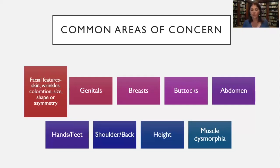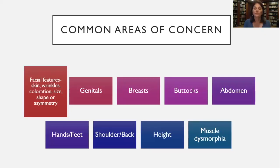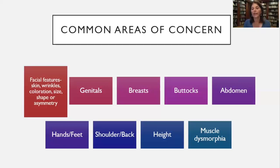The skin is extremely important — wrinkles, the size and shape of particular parts of the face, the nose, the forehead being too big, not having a perfect hairline, asymmetry. One eye is bigger than the other, eyebrows not perfect. But they're not limited to the face — they may be concerned with genitals, labia, breasts, buttocks, abdomen, or even hands, feet, shoulders, back, or height.